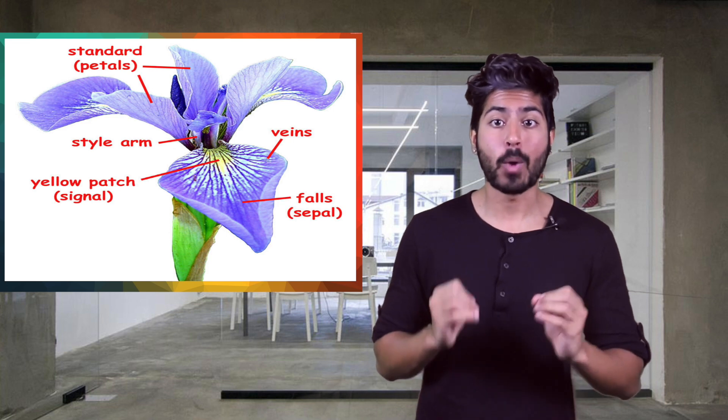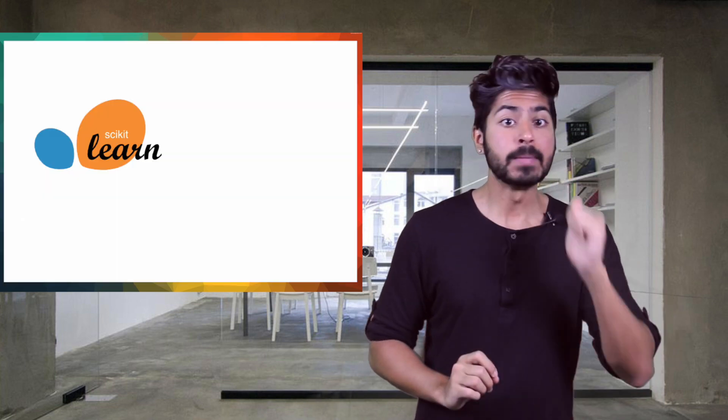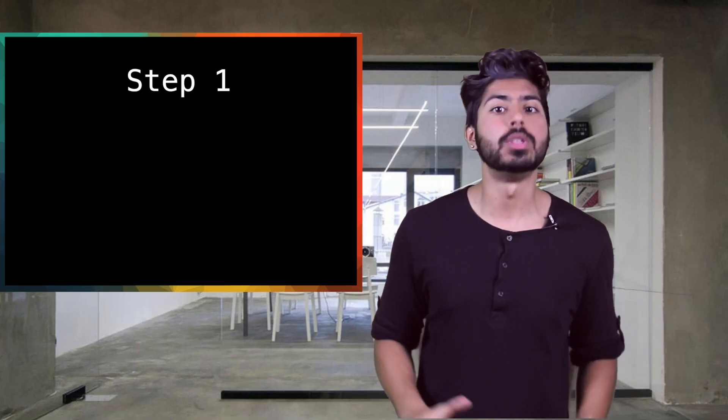We're going to make this iris flower recognition app with just seven lines of Python using two dope libraries, scikit-learn and TensorFlow, which we'll import right at the start. So let's do this.